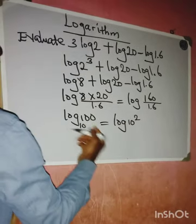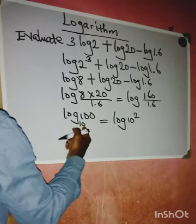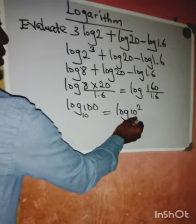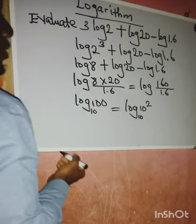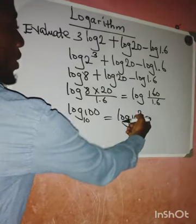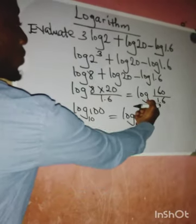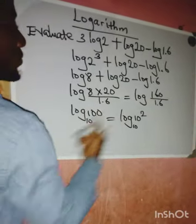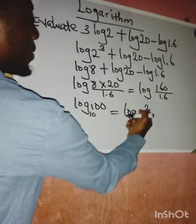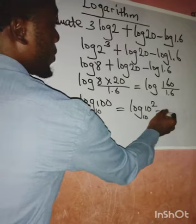We have logarithm of 10 square to base 10. From here, there's a law that says this power can come to the back, so we are going to have 2 log 10 to base 10.